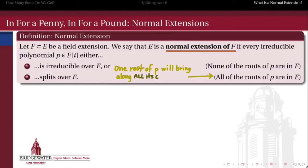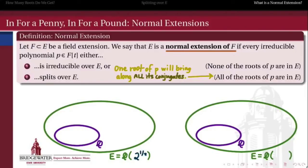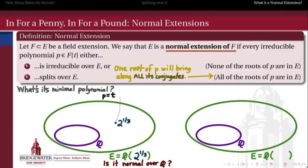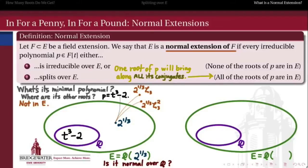So if we have a normal extension of F to E, then any polynomial over F will either have no roots at all in E and still be irreducible, or if it brings along one of its roots, then that root brings along all of its conjugate friends. Looking at our two examples again: is the extension of the rationals by 2^(1/3) a normal extension? Its minimal polynomial over the rationals is t³ - 2, irreducible over Q. The other roots of that minimal polynomial are not real and therefore don't belong to E. Therefore t³ - 2 has one of its roots but not all of its roots in the extended field, which shows that E over Q violates the definition of normality. So Q(2^(1/3)) is not a normal extension of Q.